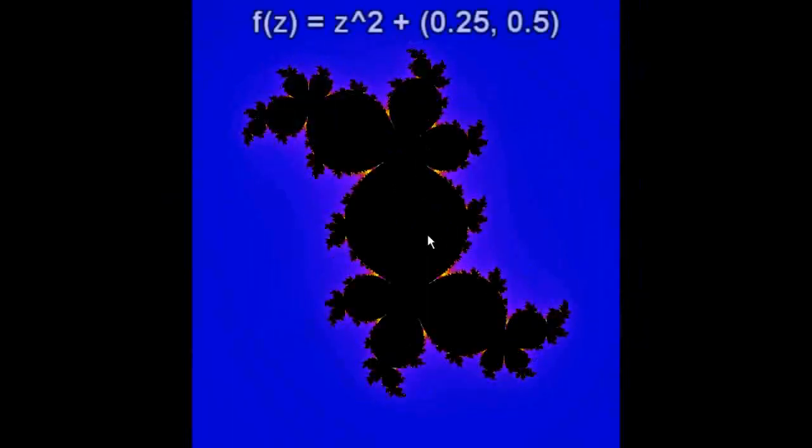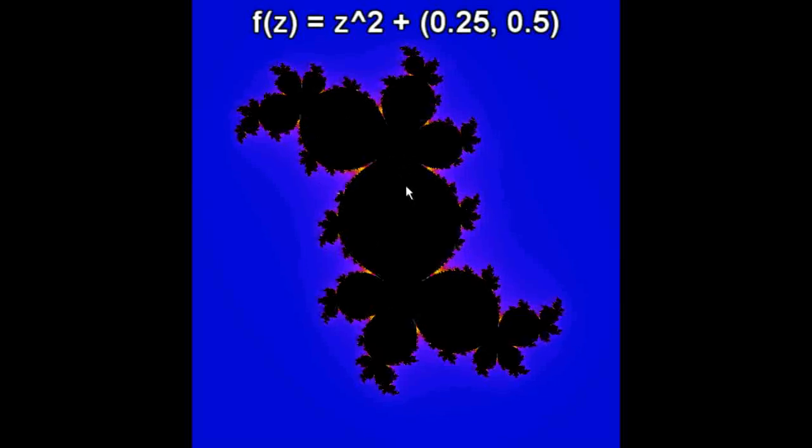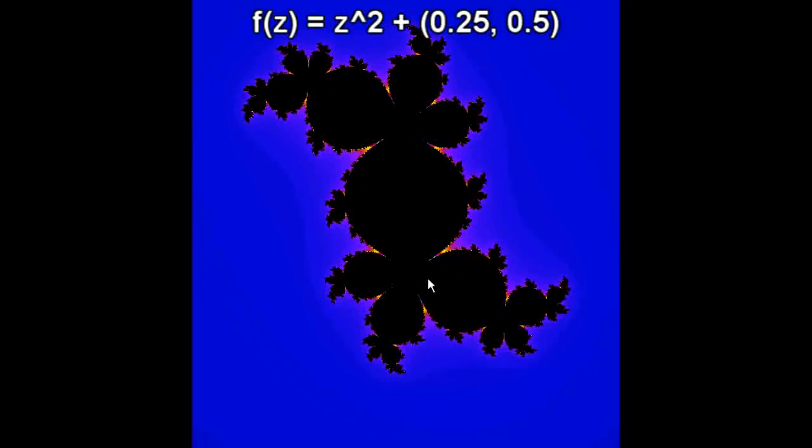So we changed our function very, very slightly, and already we are getting some very interesting things. Now let's change our function very slightly again. We added a real number 0.25 before, but let's add a complex number now. Let's add the complex number 0.25, 0.5. So it's got an imaginary component of 0.5. What do you get?